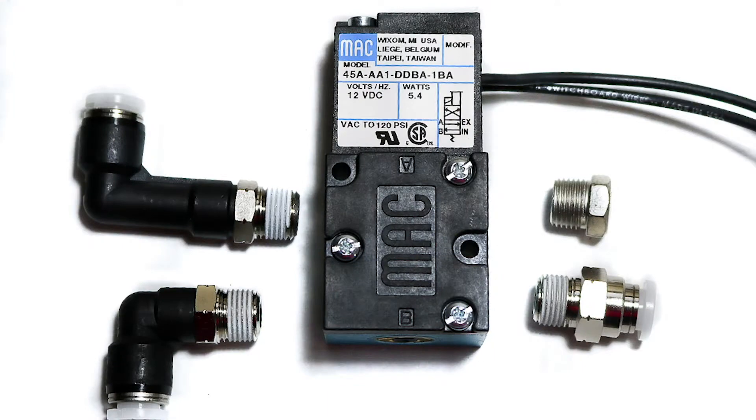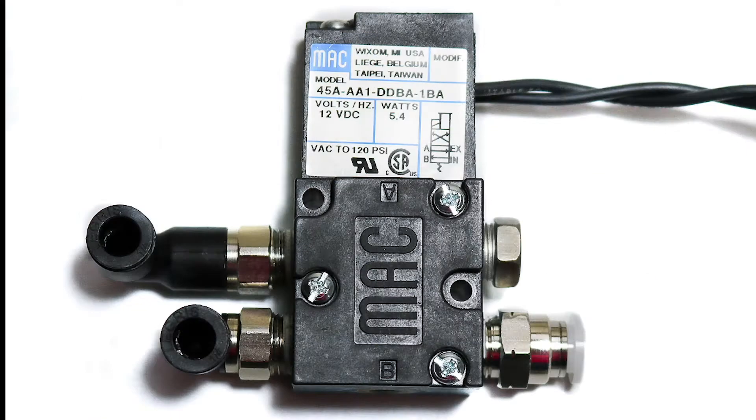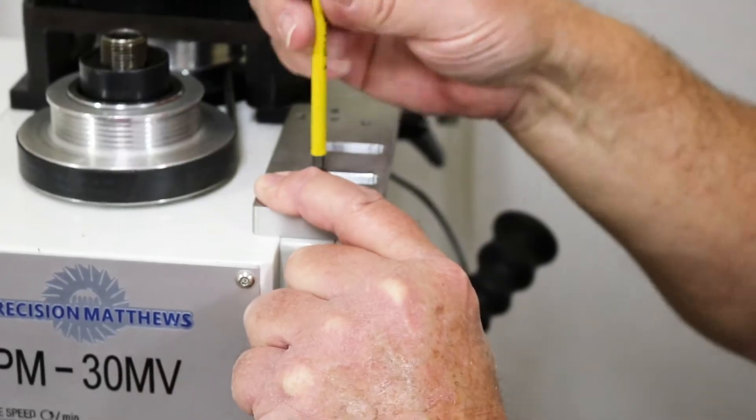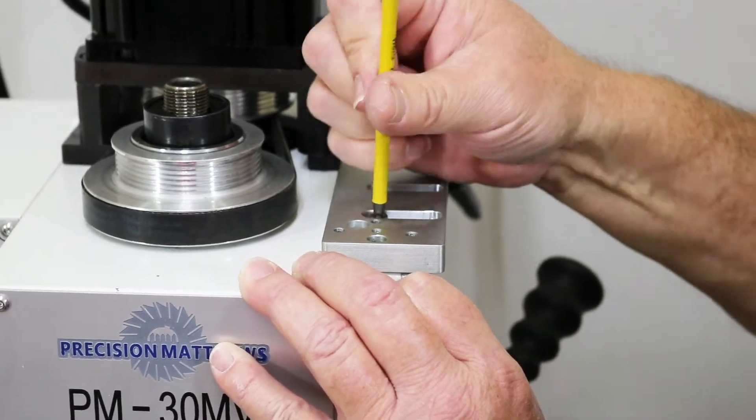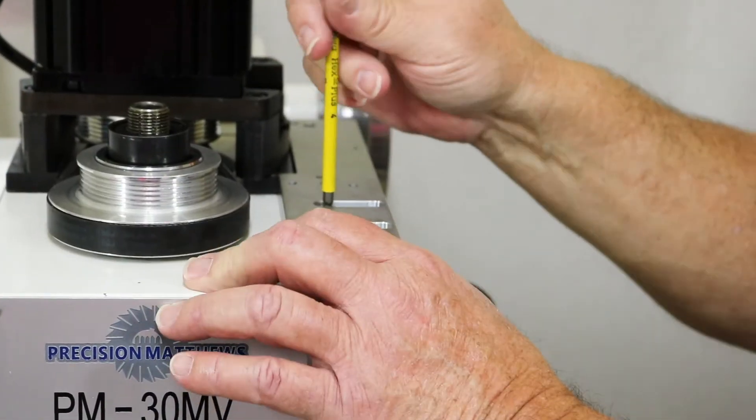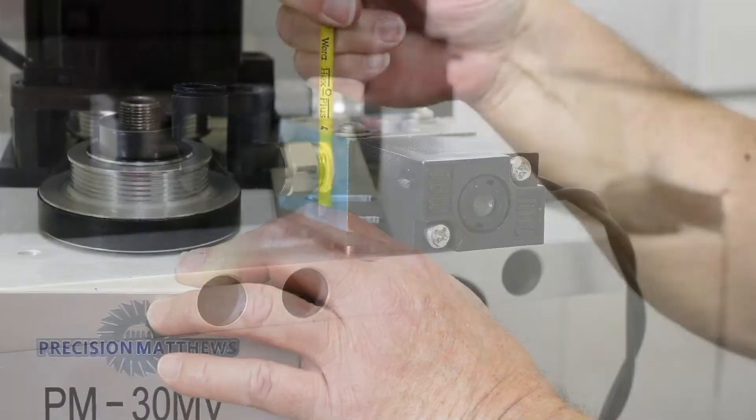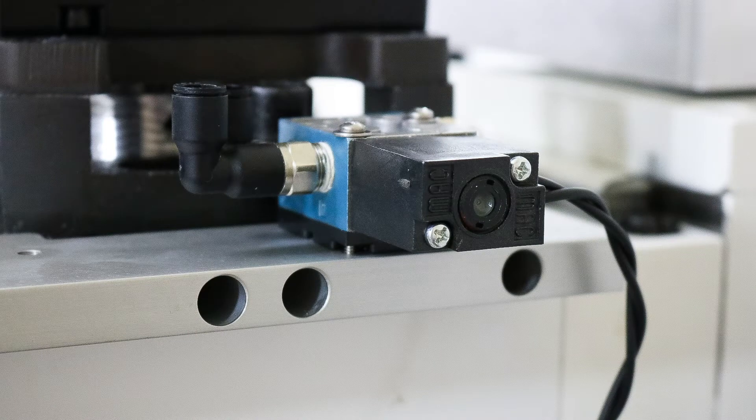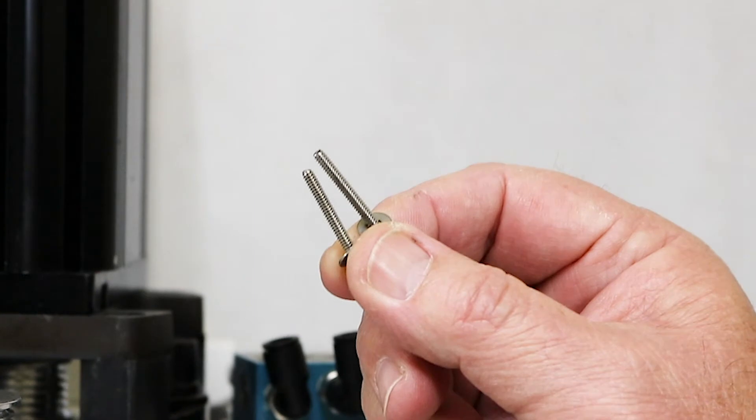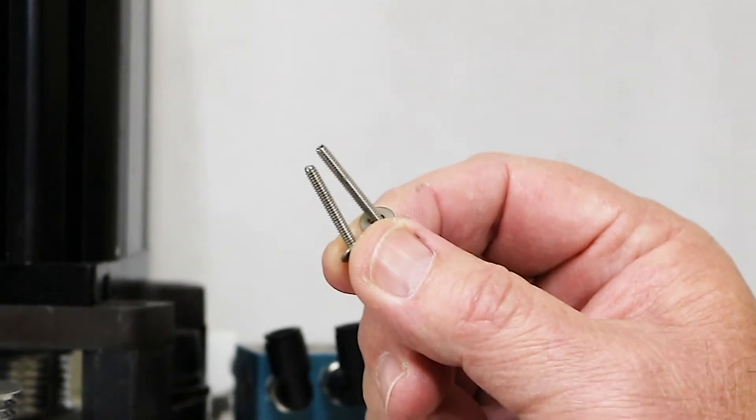Install the fittings in the pneumatic valve, then install the wiring harness and junction box on the support plate. Connect the pneumatic valve to the support plate using the supplied 440 by 1 1⁄8 inch machine screws.